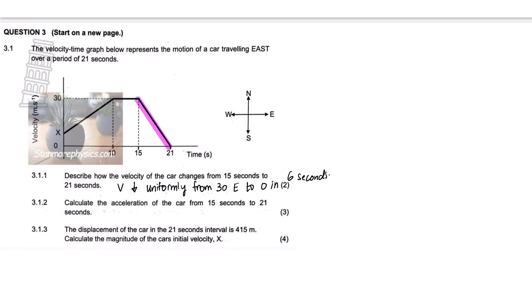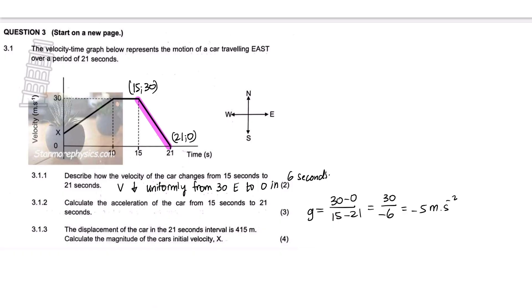Question 3.1.2: Calculate the acceleration of the car from 15 to 21 seconds. If we have a velocity-time graph and want acceleration, we work out the gradient. Coordinates: (15, 30) and (21, 0). Gradient equals 30 minus 0 divided by 15 minus 21, which is 30 over negative 6, equal to negative 5 meters per second squared east. We convert that to 5 meters per second squared west.